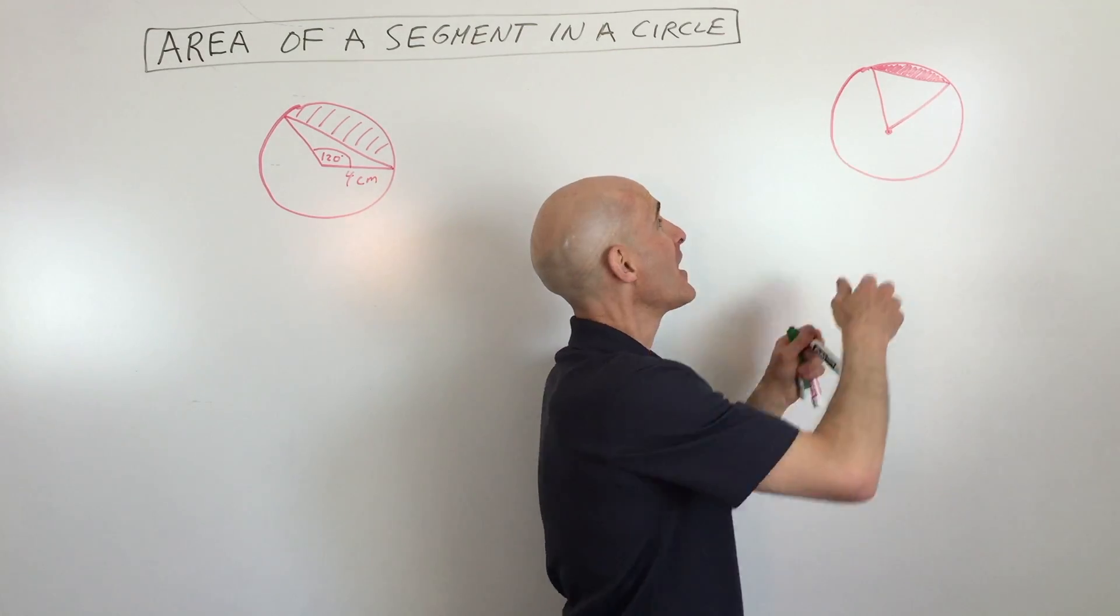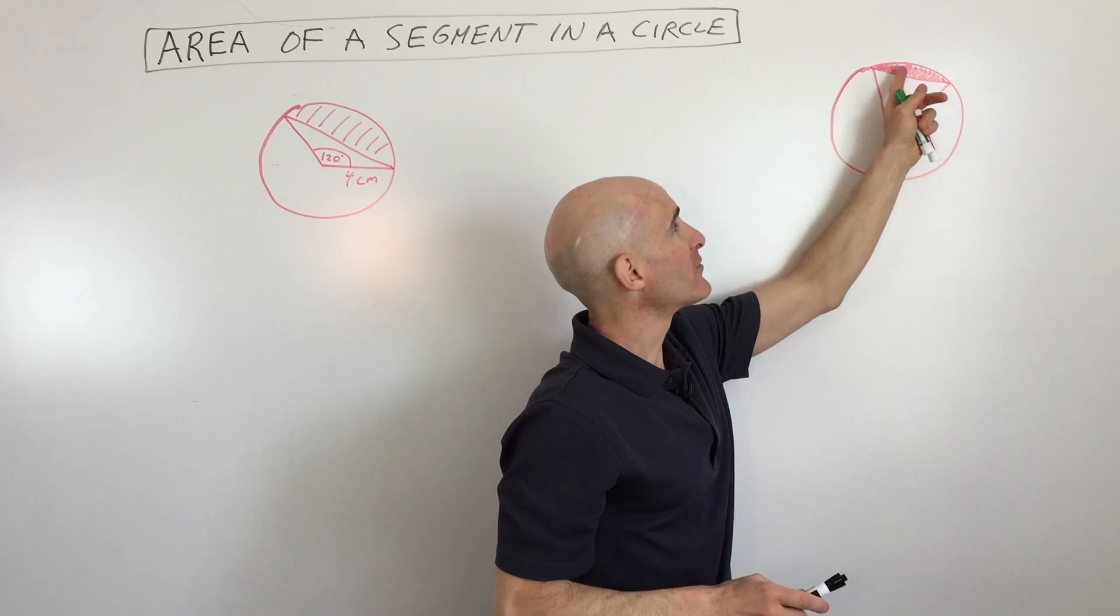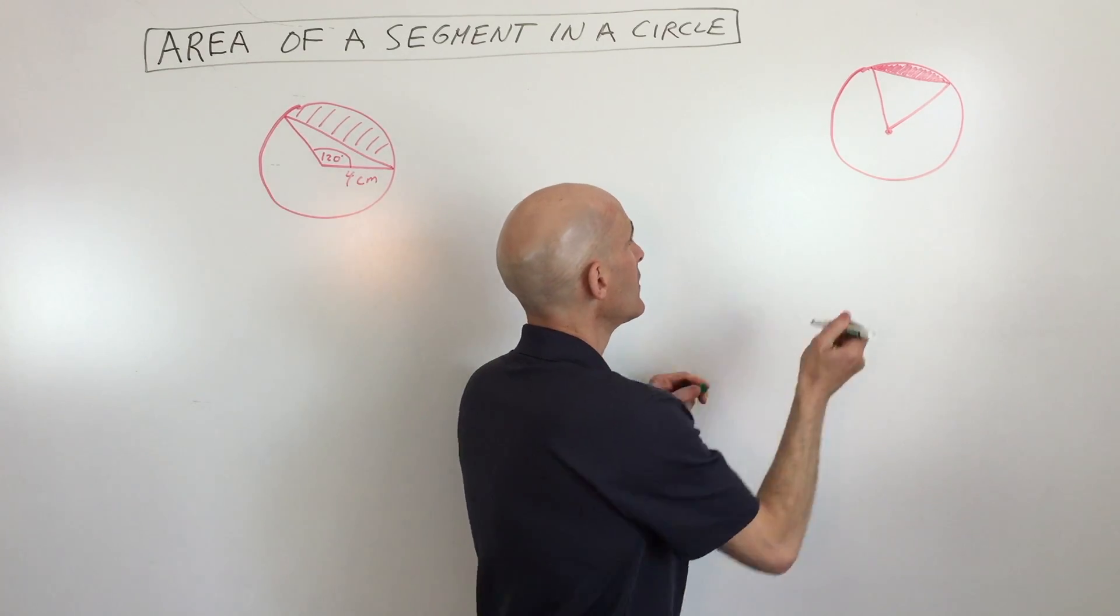If you subtract off this triangle here, you're going to be left with this area, which is called a segment. I'll just draw this again so you can see it real quickly.